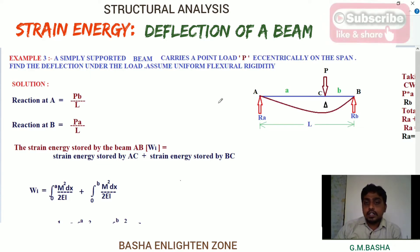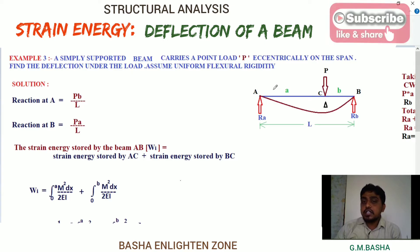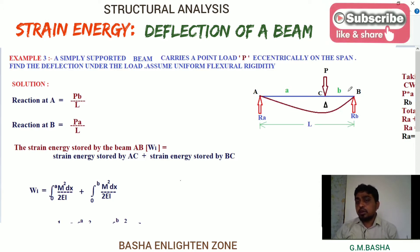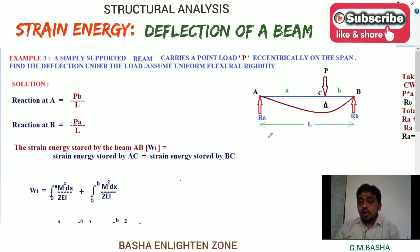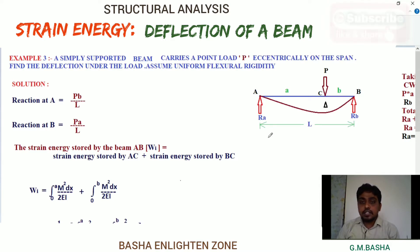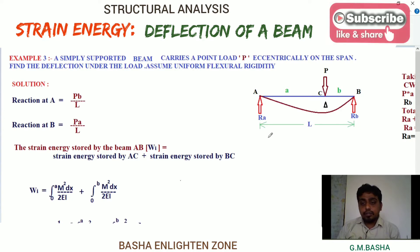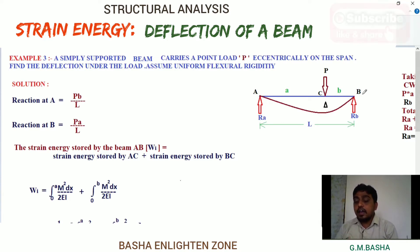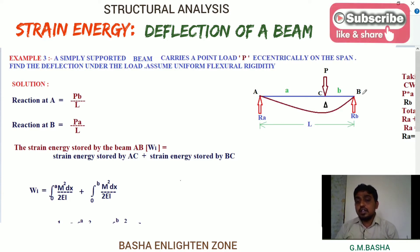Assume uniform flexural rigidity. This is a simply supported beam where a concentrated load is placed at a distance A from left support A and distance B from support B. The load is not exactly at the center — it is acting eccentrically on the span, not exactly at the center.